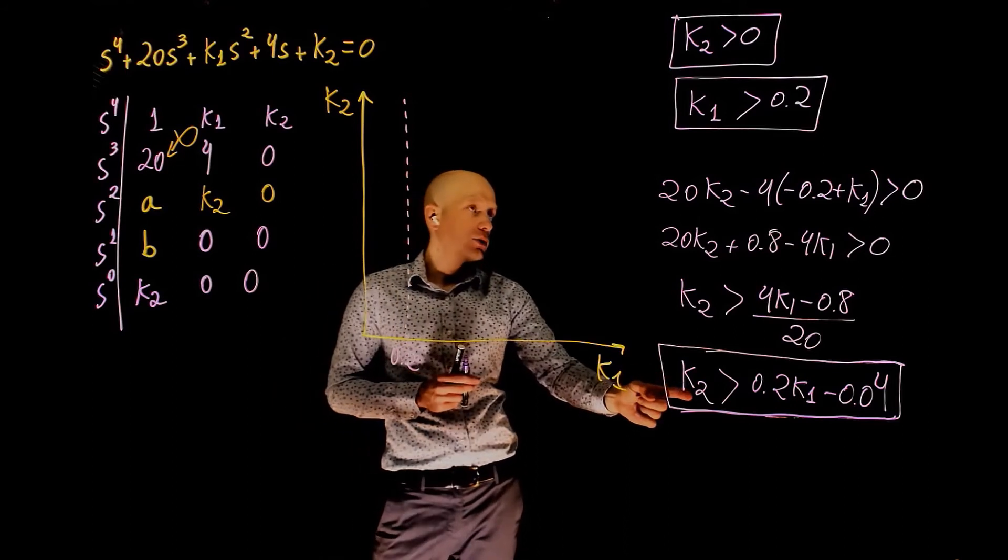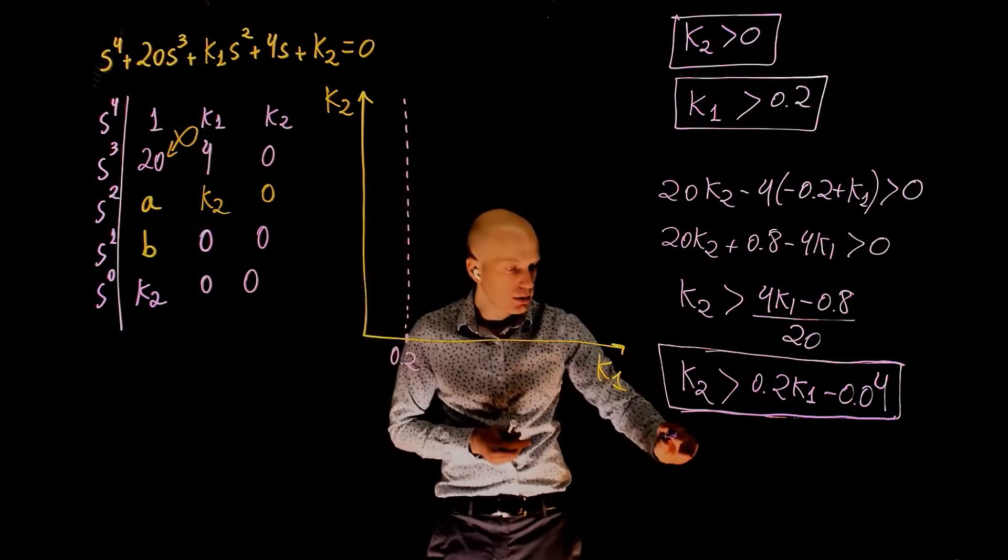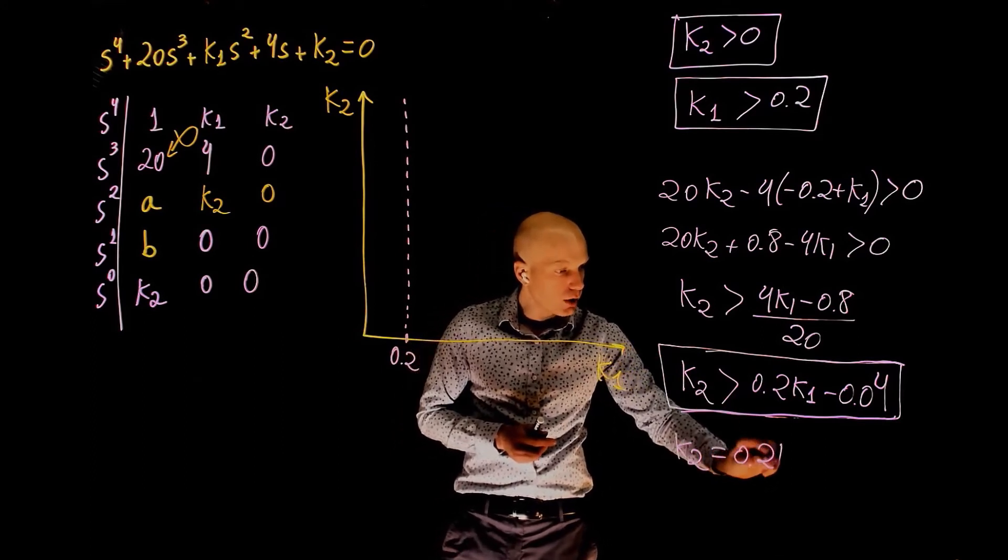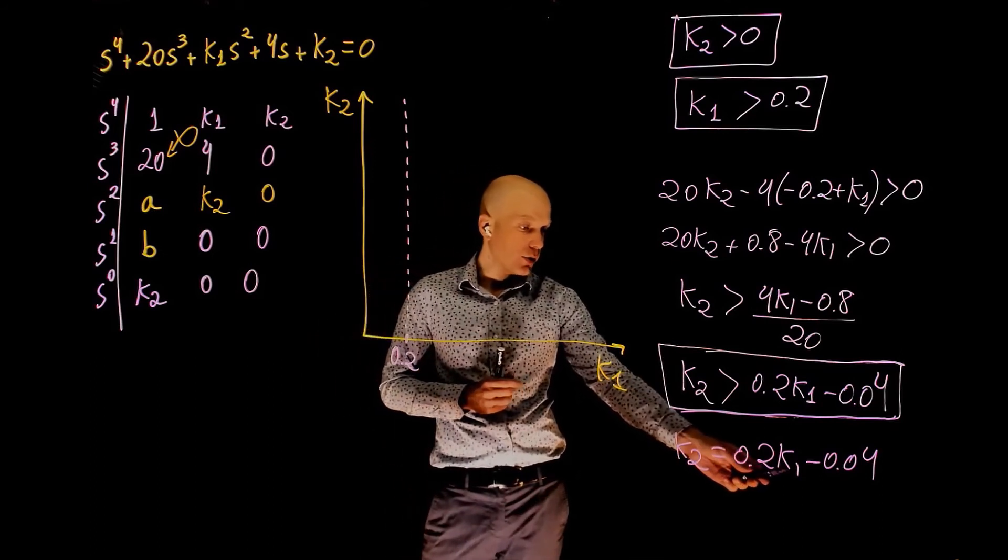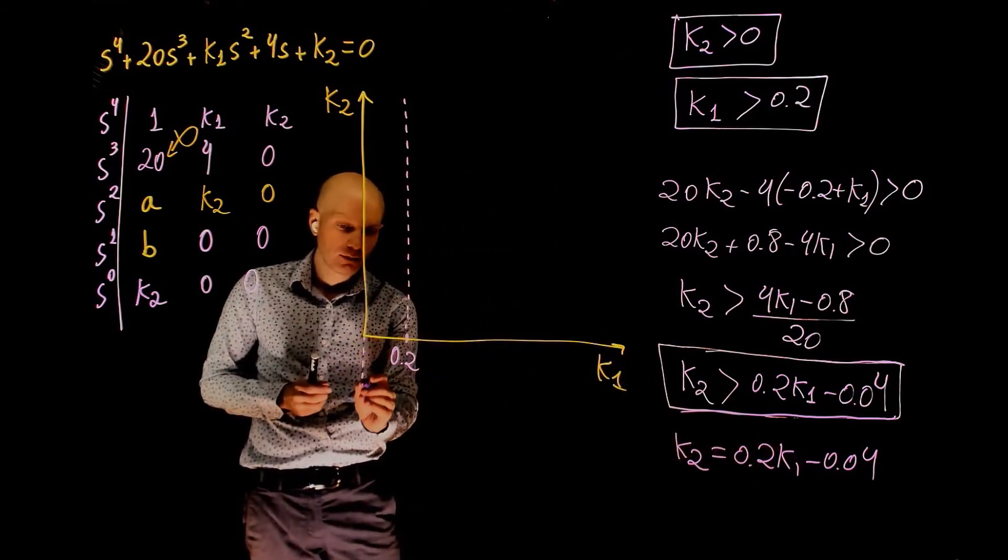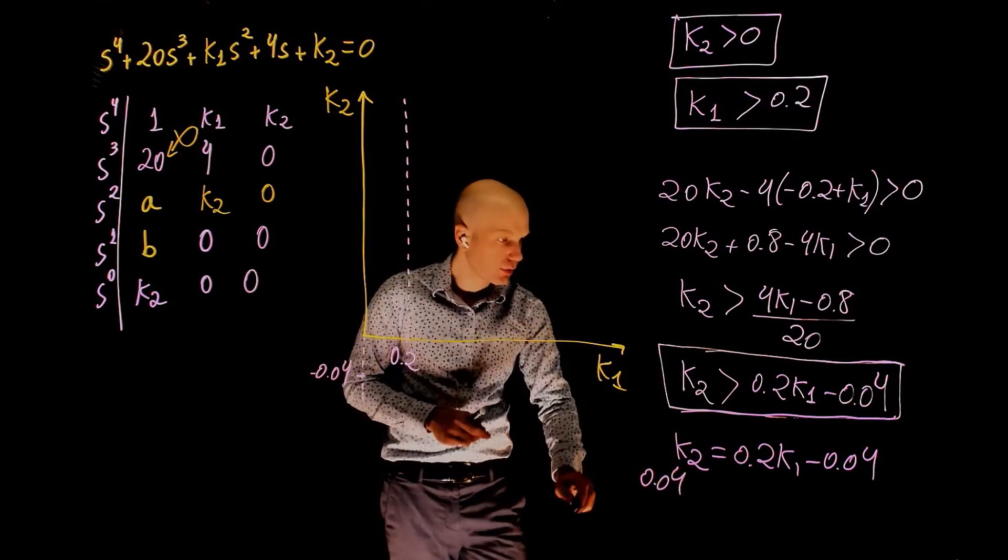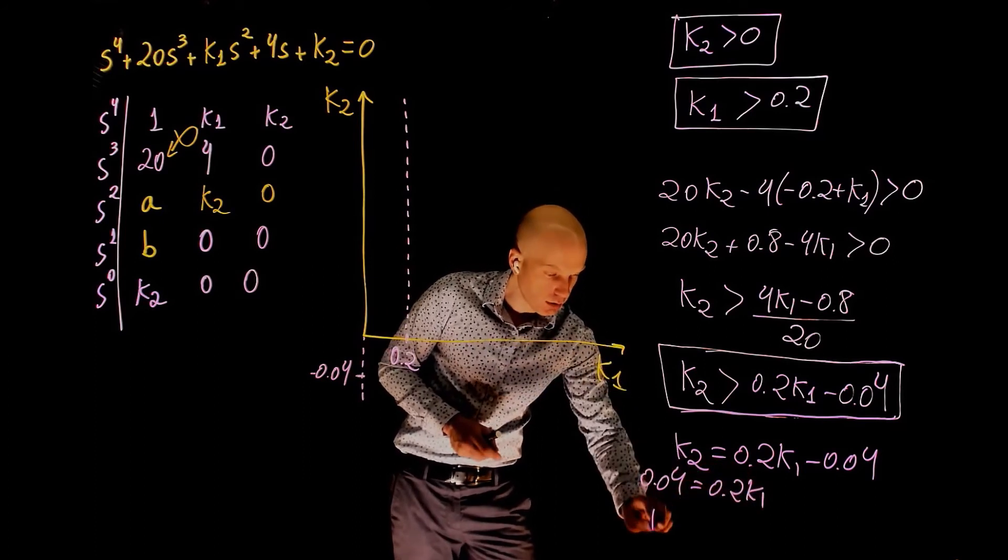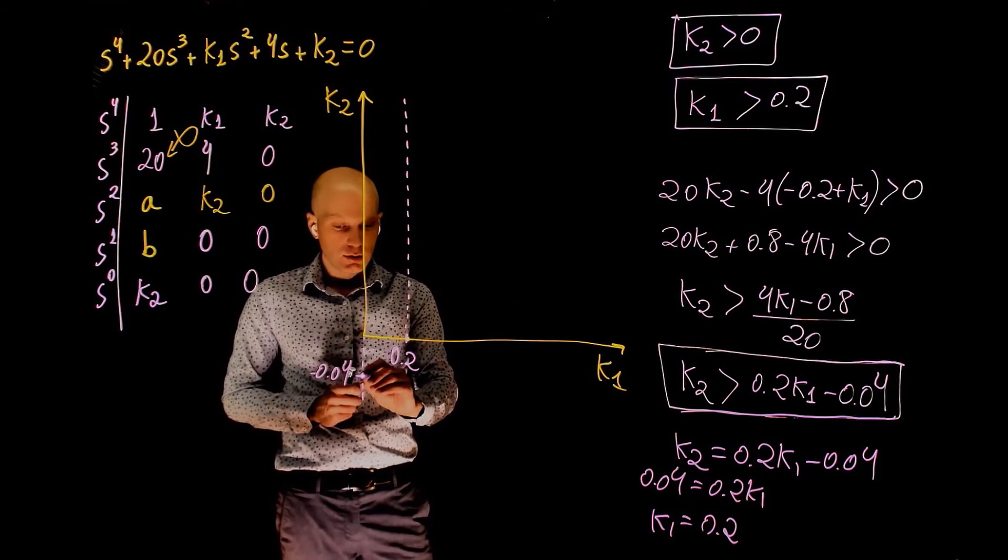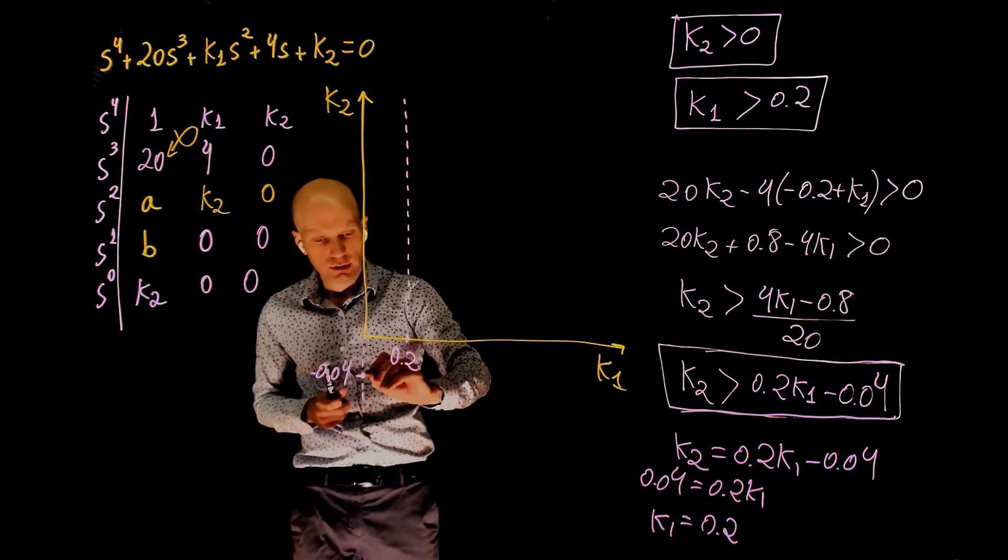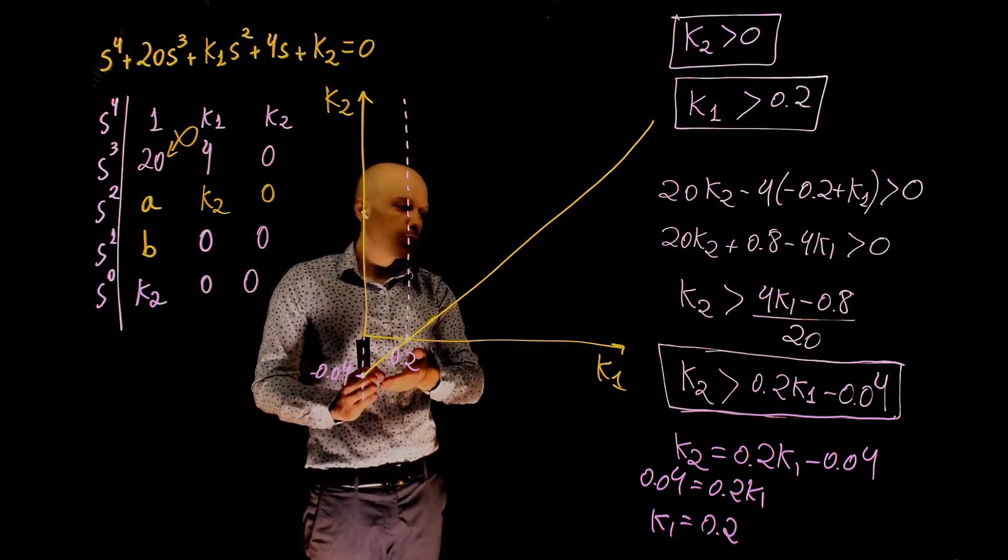The third condition now relates k2 and k1 through this formula: k2 greater than 0.2k1 minus 0.04. Let's create this curve first. We can simply equate k2 to 0.2k1. This will give us a line. When k1 is 0, k2 is negative 0.04. When k2 is 0, we have 0.04 equals to 0.2k1, so k1 is equal to 0.2. This will give us a line that divides this plane into 2. Now, this straight line corresponds to this condition.